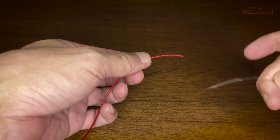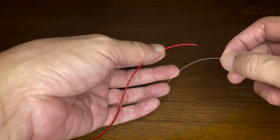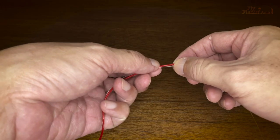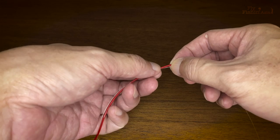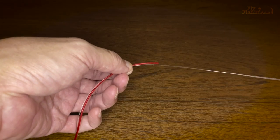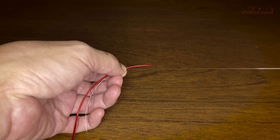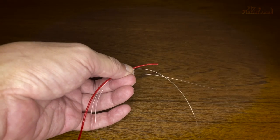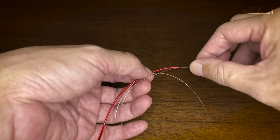First thing you do is put the butt end of the leader pointing towards the opposite direction of the fly line, and you pinch both lines between your thumb and index finger roughly about an inch away from the end. Then you bring around the tippet end of the leader.